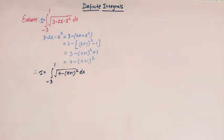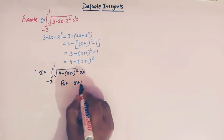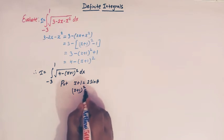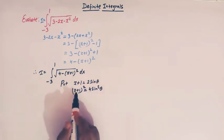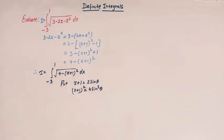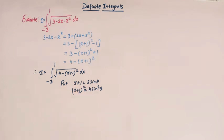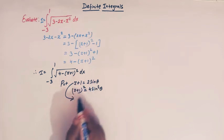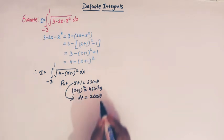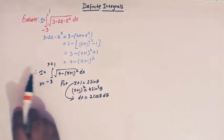At this step we make a trigonometric substitution. Let x + 1 = 2sinθ, because (x+1)² becomes 4sin²θ. When we put 4sin²θ inside, we can take 4 common and get 1 minus sin²θ, which is cos²θ. Differentiating both sides, dx = 2cosθ dθ. x varies from minus three to one, so let us change the limits accordingly.